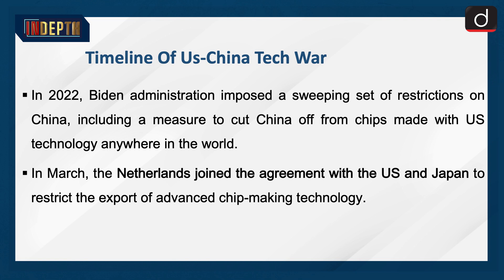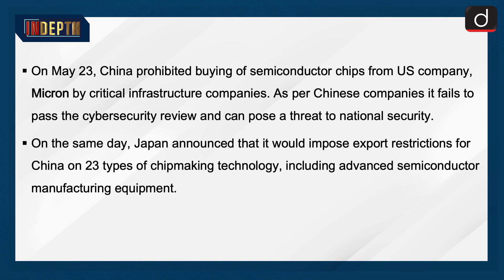Timeline of US-China tech war: In 2022, the Biden administration imposed a sweeping set of restrictions on China, including a measure to cut China off from chips made with US technology anywhere in the world. In March, the Netherlands joined an agreement with the US and Japan to restrict the export of advanced chip-making technology. On May 23, China prohibited critical infrastructure companies from buying semiconductor chips from US company Micron, as per Chinese authorities, citing failure to pass the cyber security review and posing a threat to national security.